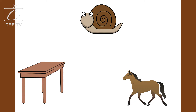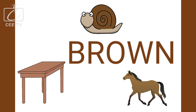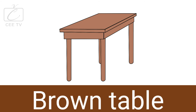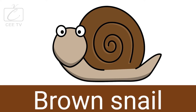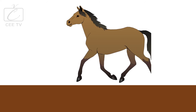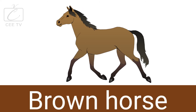Let's identify these brown objects. Brown table. Brown snail. Brown horse.